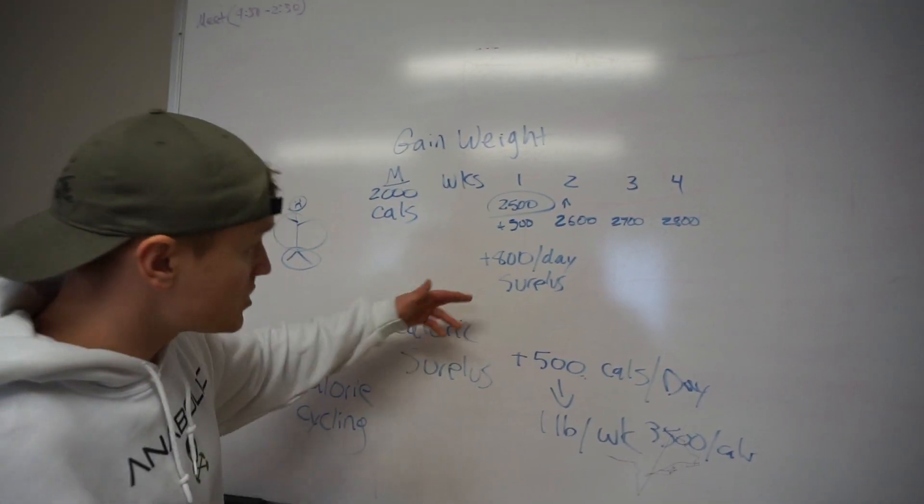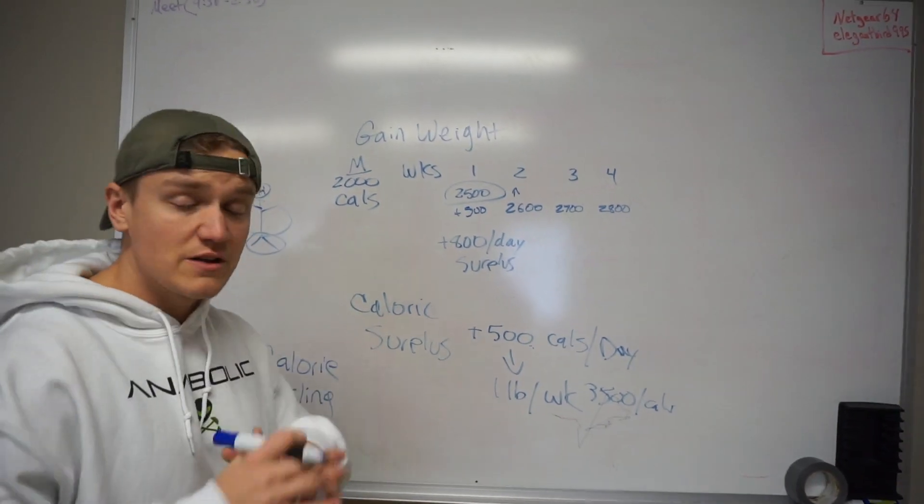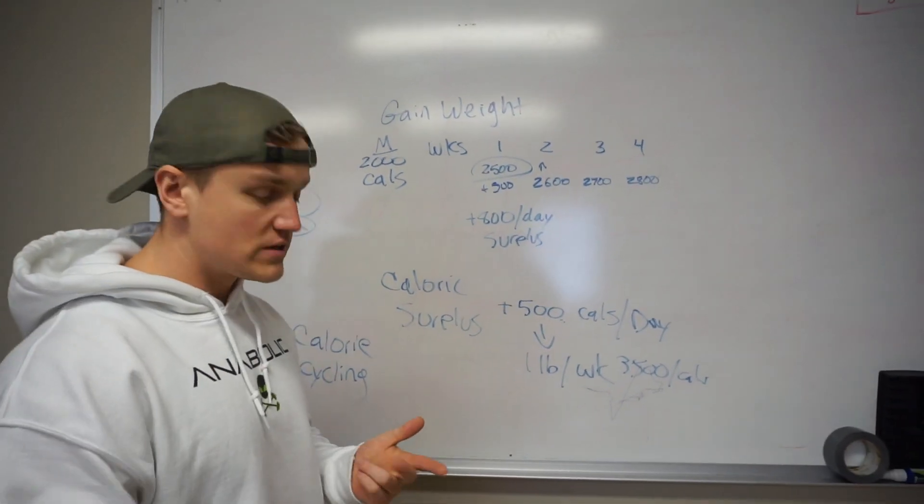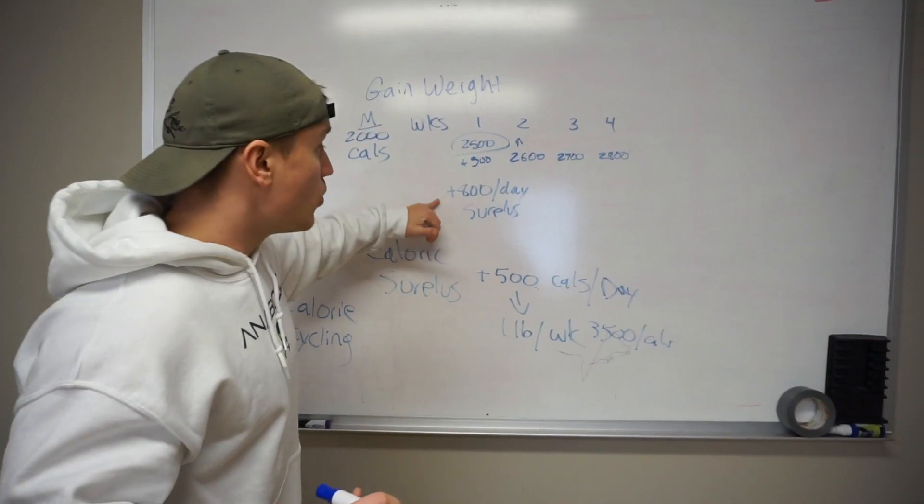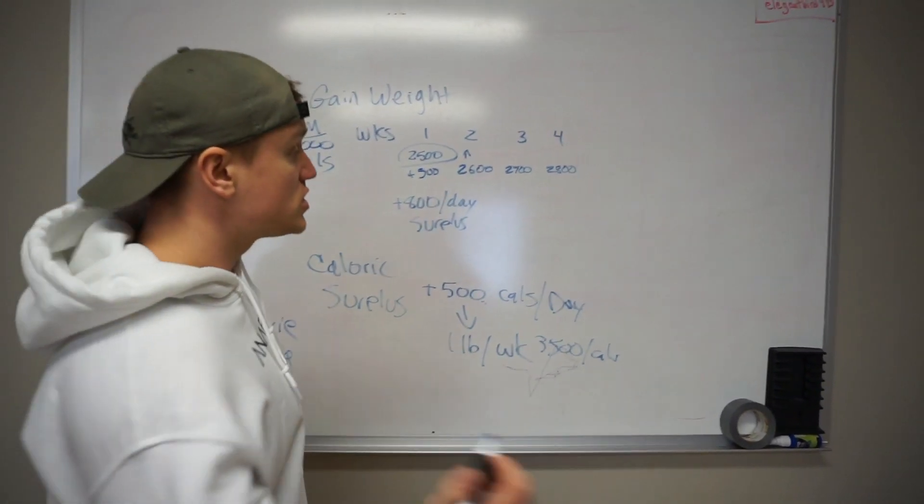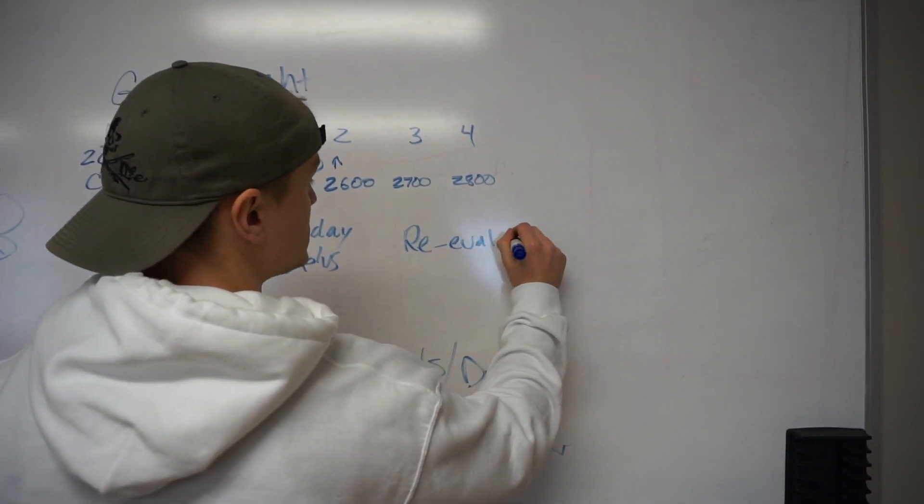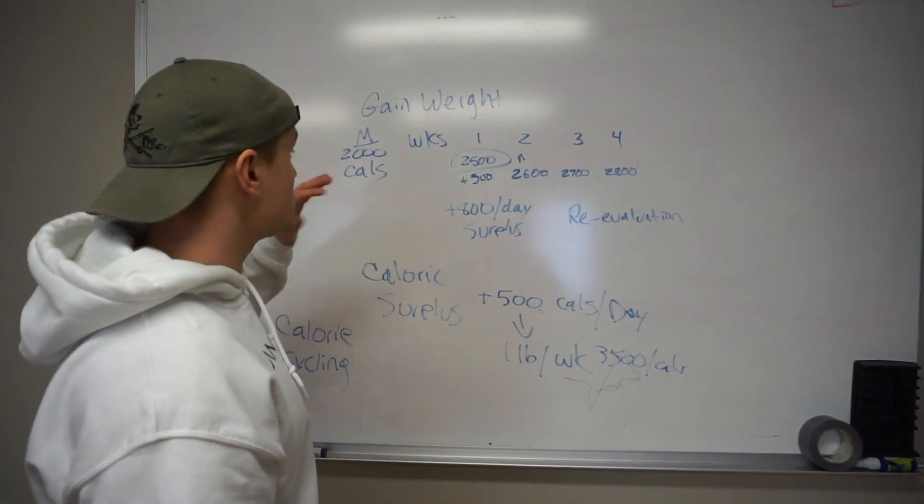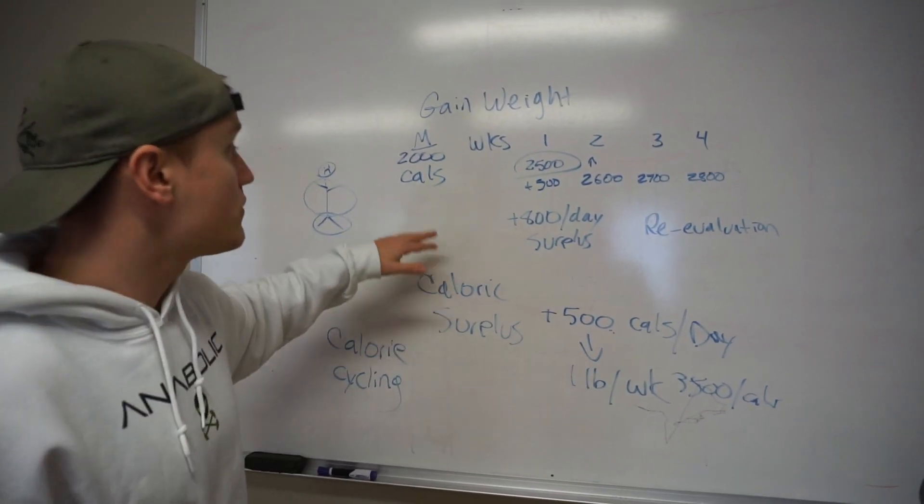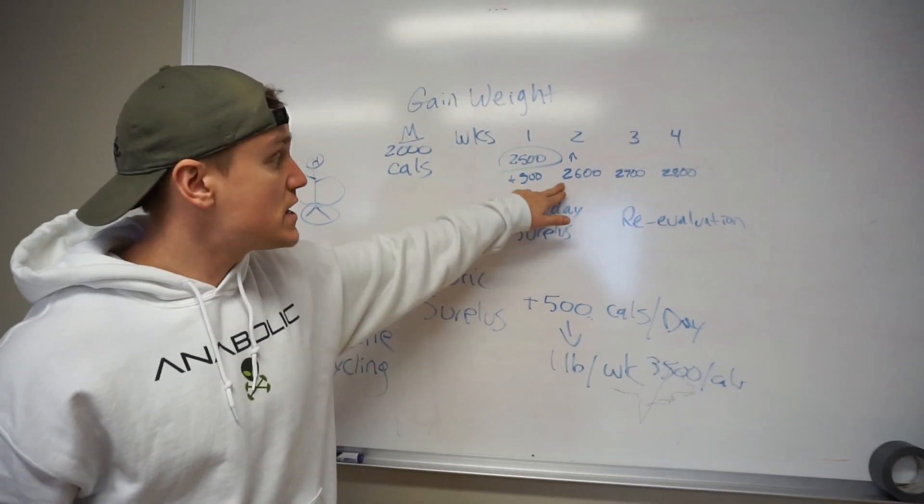That 800 a day surplus basically means we're gaining over a pound per week by definition. Now it's going to vary based on person, genetics, lifestyle factors, all this stuff, age, weight. But once we're in the 800 a day surplus, you're going to do what's called a reevaluation. This whole time, you need to be weighing yourself, making sure that you can gain weight correctly.